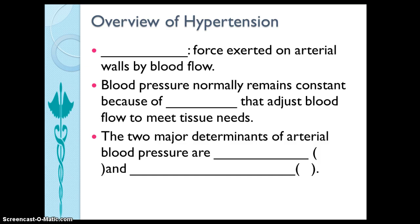The first one: arterial blood pressure is the force exerted on the arterial walls by blood flow. Blood pressure normally remains constant because of the homeostasis mechanism that adjusts blood flow to meet tissue needs.